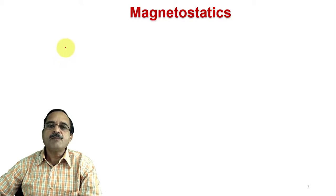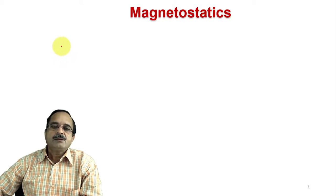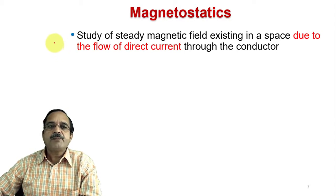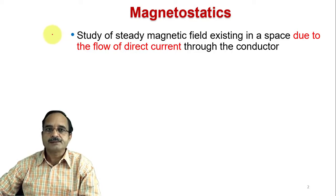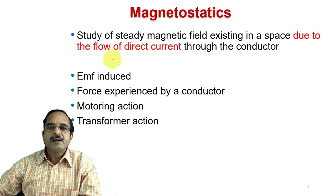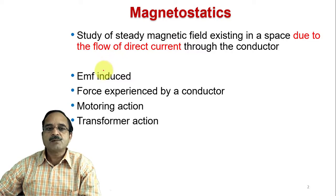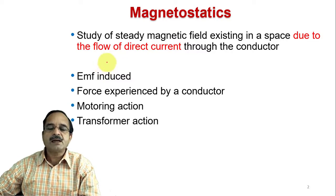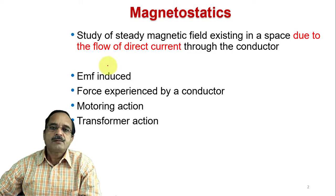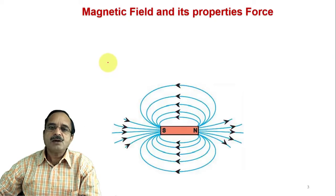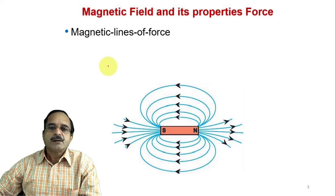Biot-Savart law comes under the topic of magnetostatics. Magnetostatics is the study of magnetic field produced because of DC current flowing through a conductor. Various concepts like EMF induced, force experienced by a conductor, motoring action, transformer action, etc. are related to magnetostatics.